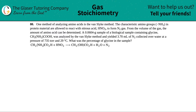In this case, we have a 0.0604 gram sample of a biological sample containing glycine, which is CH2(NH2)COOH. This was analyzed by the Van Slyke method and yielded 3.70 milliliters of N2 collected over water at a pressure of 735 torr and 29 degrees Celsius. What is the percentage of glycine in the sample?